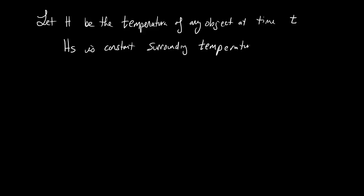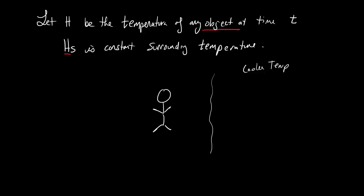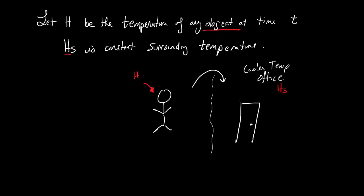People say the temperature won't be constant for that long, and you're right. But before we immerse the object in the solution, there's going to be a constant surrounding temperature H of S. I just went for a run, and as soon as I walked into my office, my office was a much cooler temperature. There was a constant temperature before I entered — that constant temperature would be HS. I would have a temperature of H, but my office had to be entered through a door, and that office has a temperature of HS. That's what the constant surrounding temperature means.